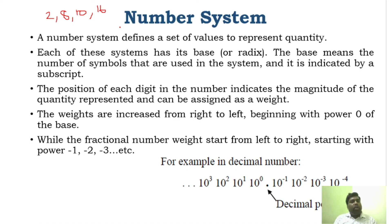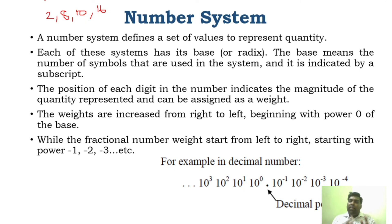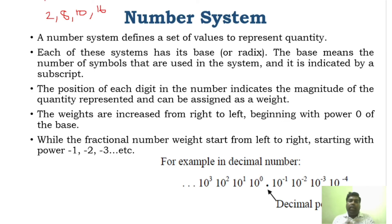There are four basic number systems: binary, decimal, octal, and hexadecimal. The representation of different number systems will differ, but conceptually they are the same. If you understand these four basic number systems, you can convert one number system to another.